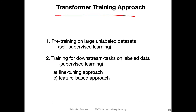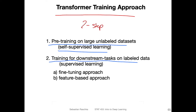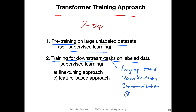The training approach behind transformers can be separated into a two-step process. The first step is pre-training the model on a large unlabeled dataset — the self-supervised learning part. The second part is then training it on smaller labeled datasets for downstream tasks. Downstream tasks would be, for example, language translation, some form of classification, text summarization, question answering, and so forth. There are many possible downstream tasks for a language model.